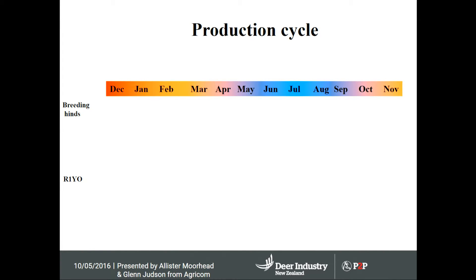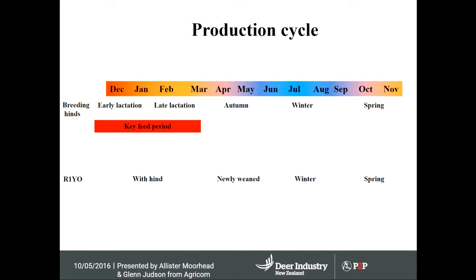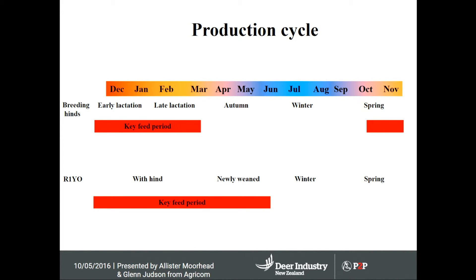We are focusing on the production cycle and acknowledging the timings where forages may have their roles. Looking at key periods: early lactation, late lactation from set stocking in late October/November right through to March. For rising one-year-olds, it's a big story through the lactation phase, setting them up for the first of June. What you do in winter depends on your expectations, and we can't limit these animals in spring if you're on a fast finishing cycle. All these things need to be acknowledged if we're going to put a forage system in place.